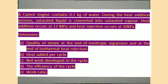The question is: a Carnot engine contains 0.1 kg of water. During the heat addition process, saturated liquid is converted into saturated vapor. Heat addition occurs at 12 MPa and heat rejection occurs at 30 kPa. Find: A) Quality of steam at the end of isentropic expansion and at the end of isothermal heat rejection. B) Heat added per cycle. C) Net work developed in the cycle. D) The efficiency of the cycle. E) The work ratio.